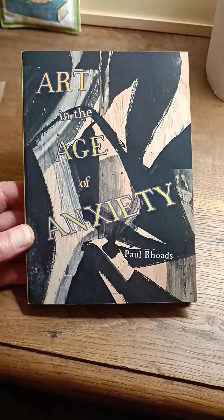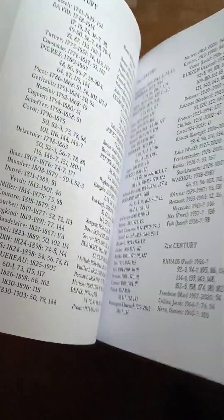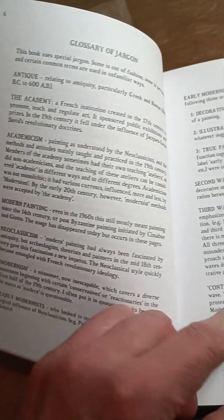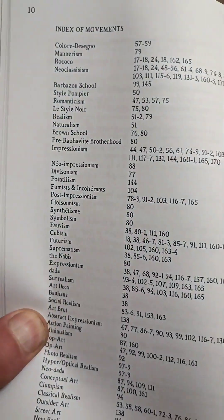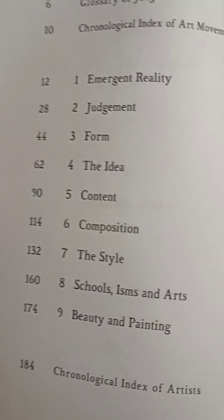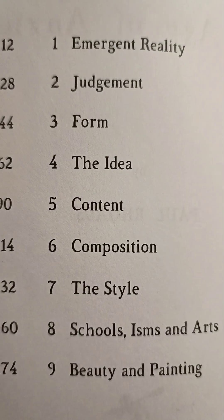This is not quite the final cover of the book, but it will look something like this. There's an index at the end of all the artists mentioned, a glossary of jargon at the beginning, and an index of movements. And here is the table of contents.